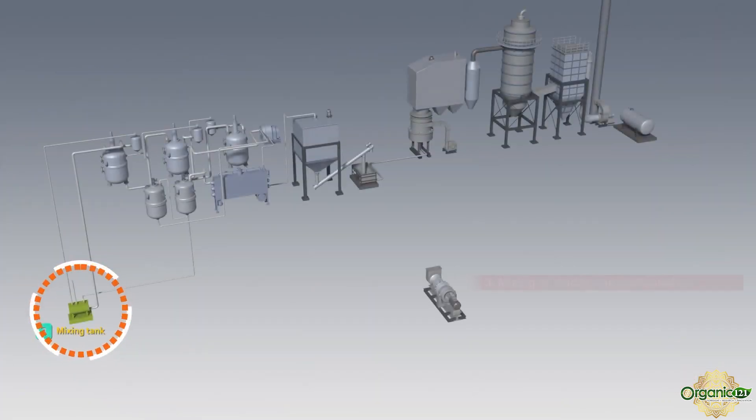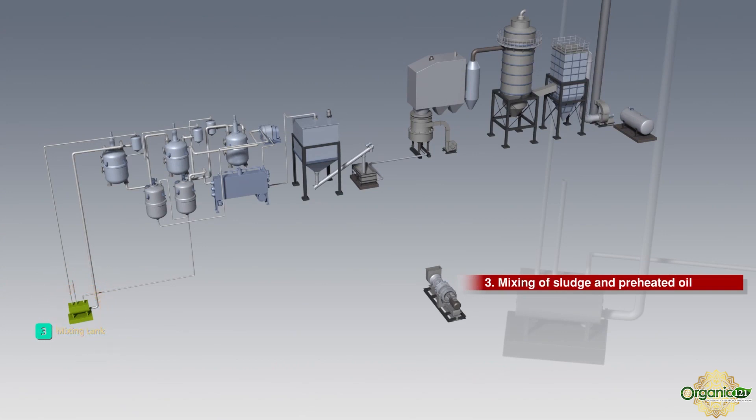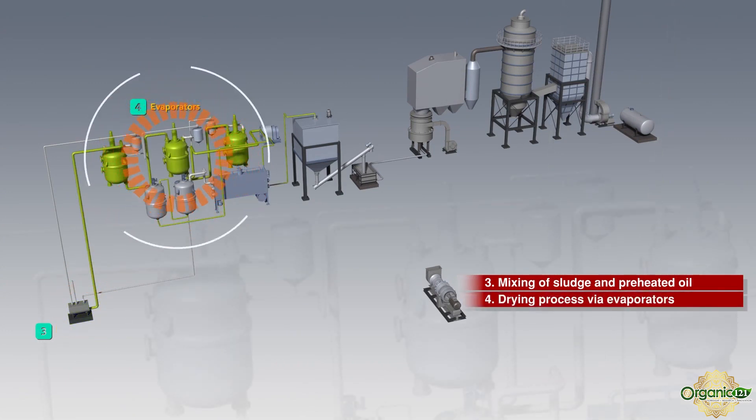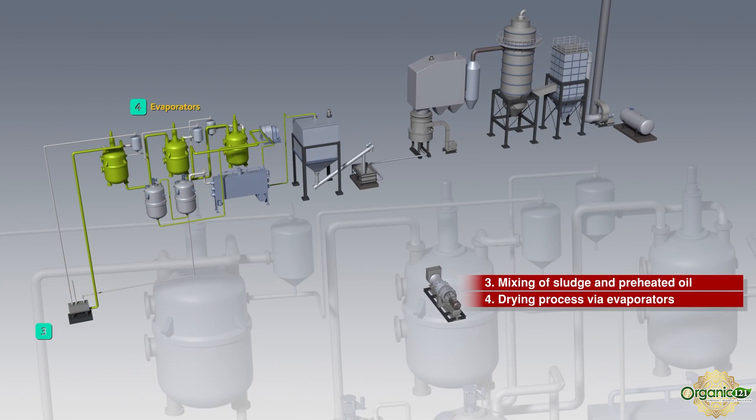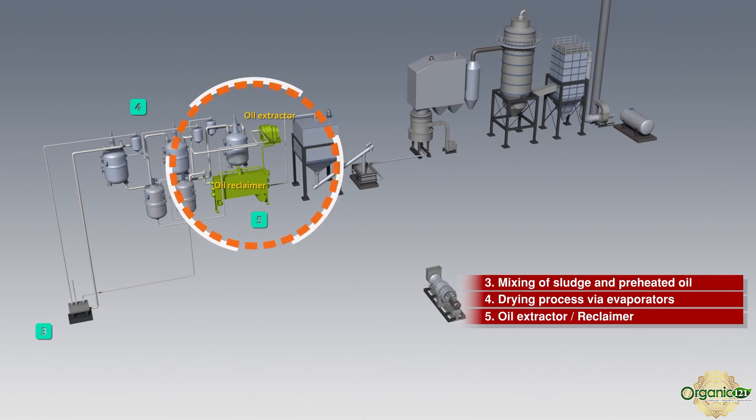Sludge is dumped in an underground sludge storage bunker. Sludge is mixed with preheated oil in a mixing tank. Oil mixed sludge is moved through a series of evaporation tanks, where the wet sludge is dried to more than 80% to 90% of the solid content.